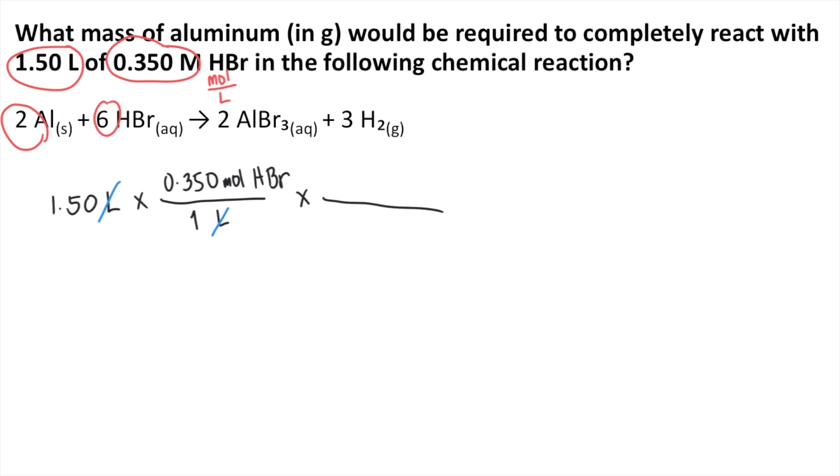Again, for every 6 moles of HBr, you need 2 moles of aluminum. So the moles of HBr would cancel out. Now you have the moles of aluminum. But we're not done yet because the problem is asking for grams of aluminum.